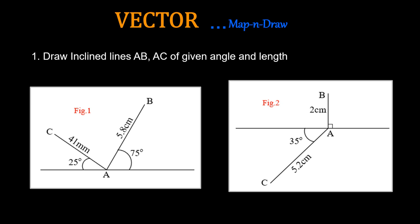The first exercise will be to draw inclined lines AB and AC as shown in figure 1 and figure 2. As shown in figure 1, take one baseline and from point A in a single go, plot AB line of 5.8 cm at 75 degrees. Just use vector and then plot AC of 41 mm at 25 degrees. Don't use protractor; we have seen that in earlier cases. And in figure 2, same AB line but perpendicular 2 cm and AC line 5.2 cm at 35 degrees. You can pause this video and perform this job, then continue for the next performance.